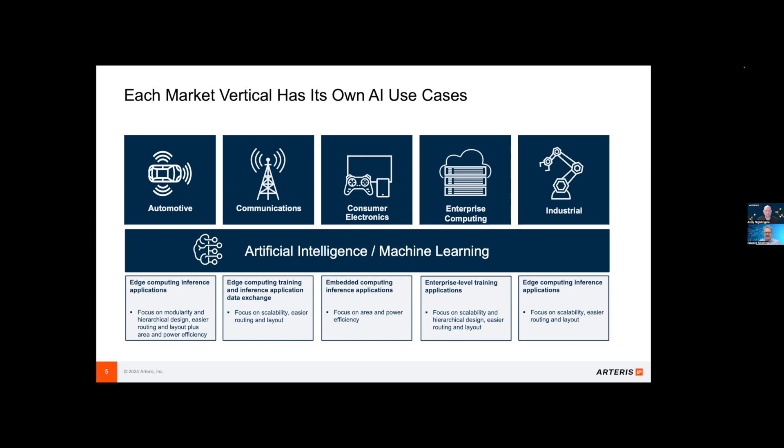There's really no single AI — it's AI for different use cases, different workloads, different vertical markets. If you look across all these different verticals, we've got edge computing inference applications, edge computing training, embedded computing inference, and then enterprise, where you get tensor units doing enterprise-level training, and edge computing for industrial with inference applications. All of these verticals have their own specific requirements.